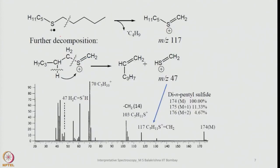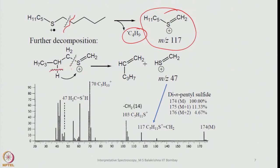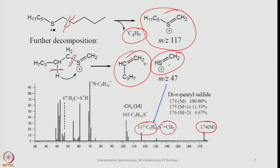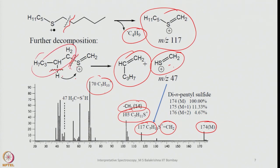Let's look at one example. Initially, cleavage happens next to beta, and then elimination of the C₄H₉ radical results in a mass fragment at m/z = 117. Further decomposition follows: either H migration can happen or the CS bond can break, eventually giving a cation at m/z = 47, which is the base peak. From this, 47 departs and we get 117, which breaks to give 103 and then 71. Another CH₂ group migrates and C₅H₁₀ is lost. The relative intensities observed are: M = 174 at 100%, M+1 at 11.33%, and M+2 at 4.6%.